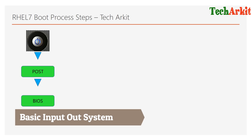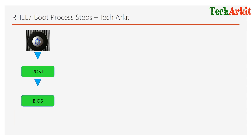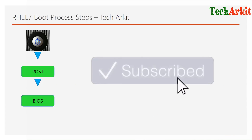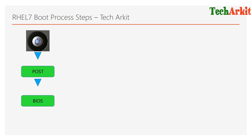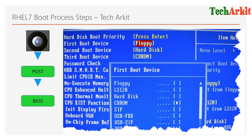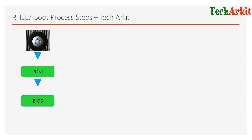Immediately after POST, a program called BIOS — Basic Input Output System — will be loaded. BIOS contains all the hardware-related information and the boot process settings, such as the boot order. If you have multiple drives connected — CD-ROM, DVD-ROM, removable media, hard drive, external devices — BIOS guides you on which to boot from first. Once you set it to boot from the local hard drive, it identifies the hardware where your operating system is installed.